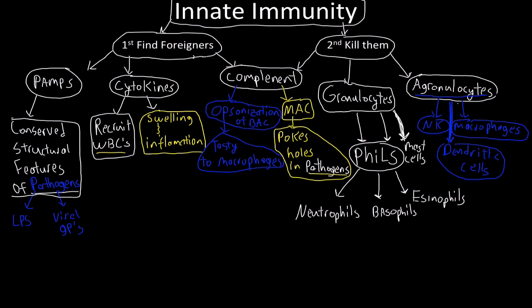So, how do we find the foreigners? How do we have pathogens or even just compounds that aren't supposed to be there? And how do we kill them? That's what I'm going to talk about in more detail. Complement I'm going to make in its own video. But for the next, I'm going to talk about granulocytes and the agranulocytes of the innate immunity.